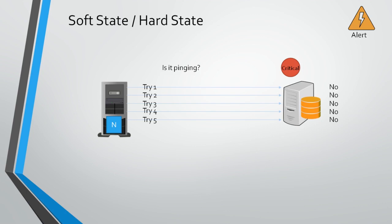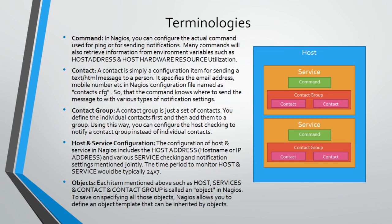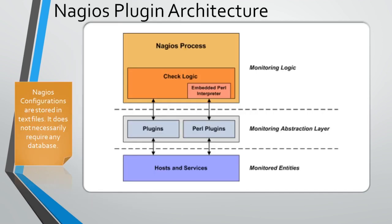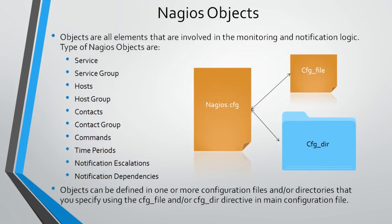These are key Nagios terminologies: command, contact, contact group, host, and service configuration objects. The main Nagios configuration file is nagios.cfg. Objects are elements involved in the monitoring and notification logic. Types of Nagios objects include services, service groups, hosts, contacts, contact groups, commands, time periods, notification escalations, and dependencies.